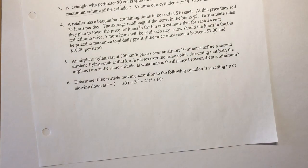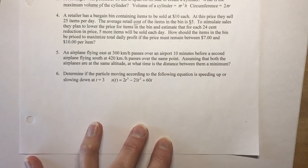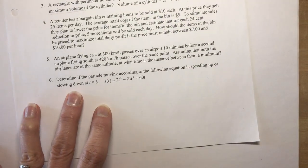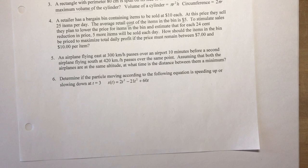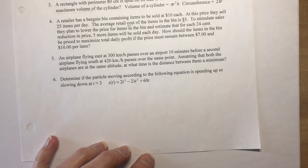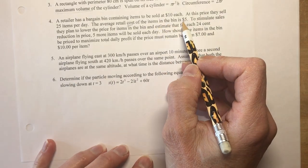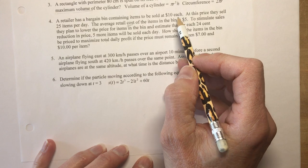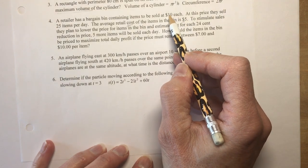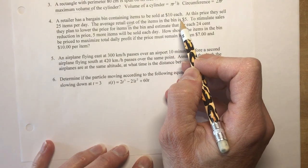Okay, so that's number three. So let's go on to number four, which is a revenue question. It says a retailer has a bargain bin containing items to be sold at ten dollars each. At this price they sell 25 items per day. The average retail cost of the items in the bin is five dollars. So that means they're making a profit of five dollars on every sale that they're making.